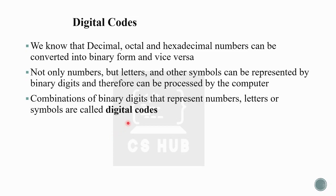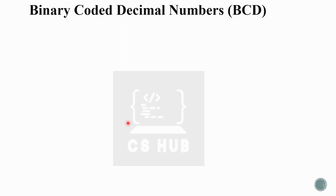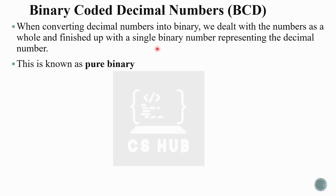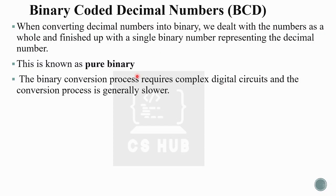The first type of code is Binary Coded Decimal, that is BCD. When converting a decimal number to binary in pure binary form, we do repeated division by two and sort the remainders in reverse order. For example, converting 128 means dividing 128 by two repeatedly until we get a single binary number representing the decimal. This method is known as pure binary.